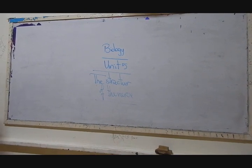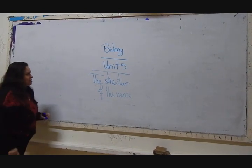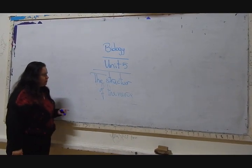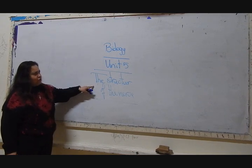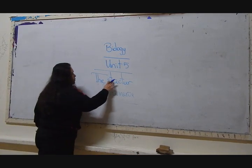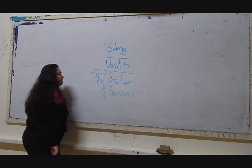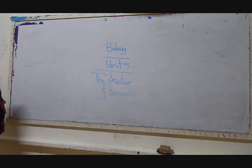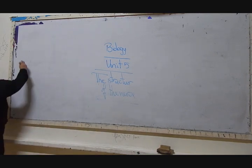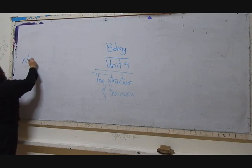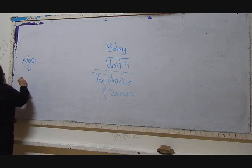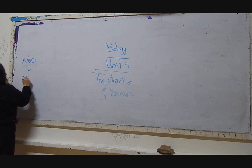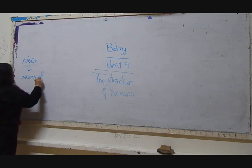Good morning. Today we will continue our studying in Unit 5. We will talk about the structure of the nerve or what the nerve is consisting of. The nerve is consisting of a group of axons of nerve cells.